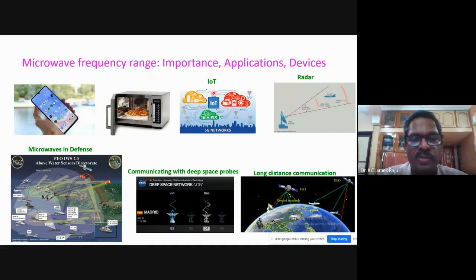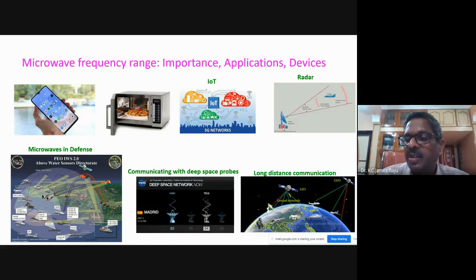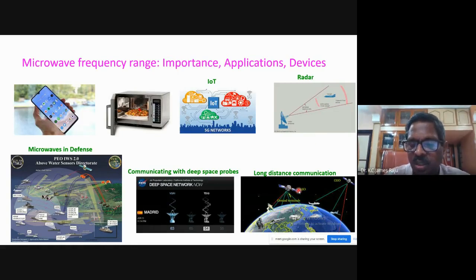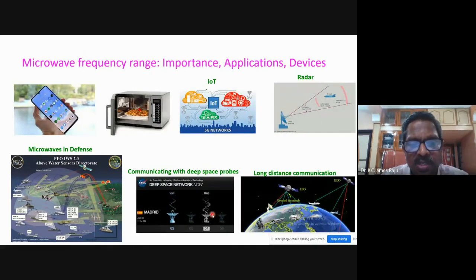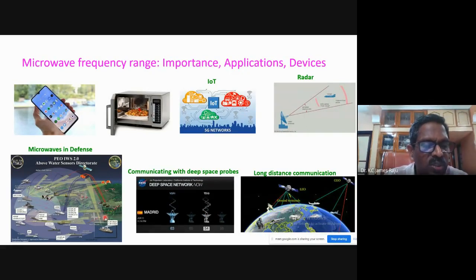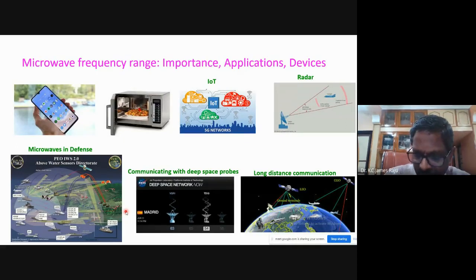Thanks to IoT, even devices need to be networked, requiring additional wireless links. One classical application of microwave links is radar, which at one point was the most important application but is now one among many. For long-distance communications, microwave is always a unique link — for aircraft, satellites, ships. Deep-space networks communicating with probes like Voyager 1 and 2 rely solely on microwave links. A whole lot of defense activities also happen through microwave links.